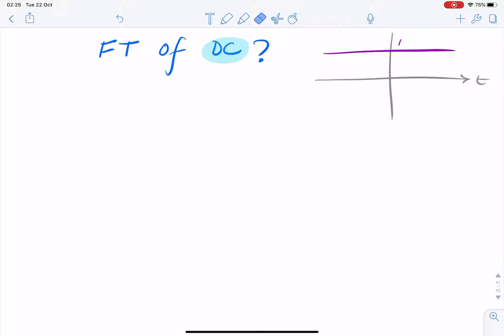So let's consider a simple DC signal with an amplitude of one. Let's try applying the Fourier transform, or the definition of the Fourier transform. So f of omega equals the integral of our signal, f of t, e to the minus j omega t dt.